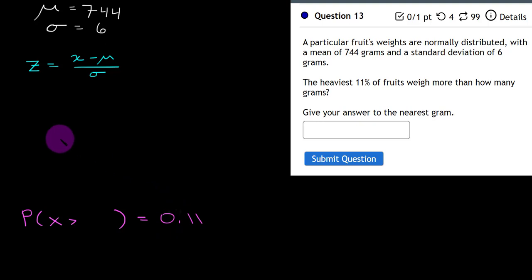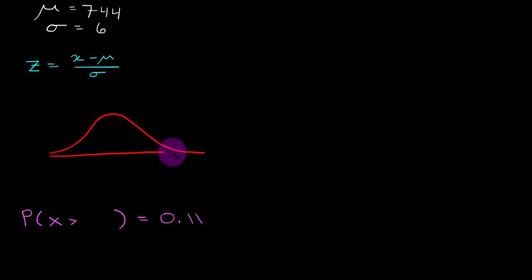If we were to draw a picture, what this might look like is a normal curve, mean of 744, x is our variable, and we want to identify the area. Now it says greater than, so we want to identify the tick mark that corresponds to this 11%. So our solution is actually going to be a tick mark right here.